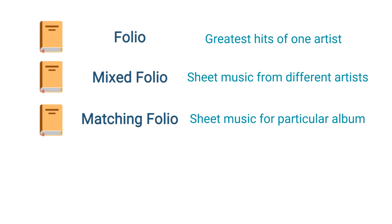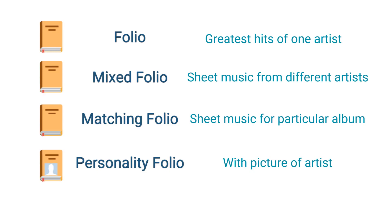A personality folio is one that has the picture of the performing artist on it. Using the previous example, Billy Joel's Greatest Hits would be considered a personality folio.